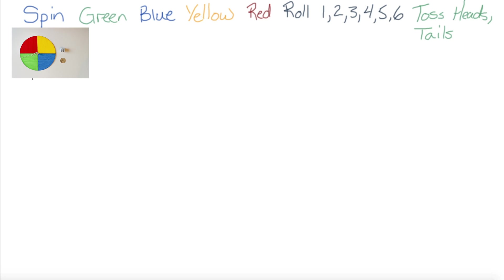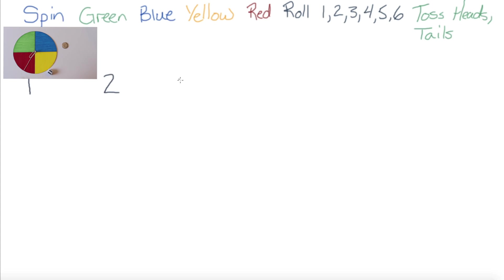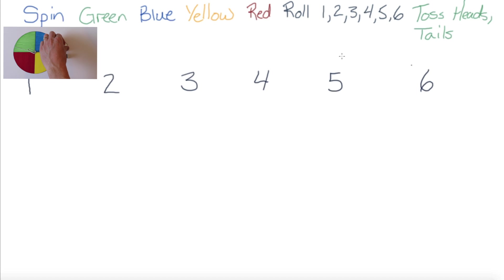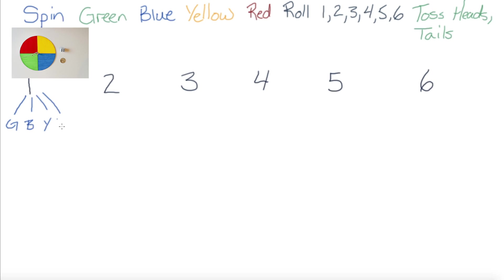Our tree diagram could look like this. I'm going to list first all the possibilities of rolling the six-sided die, horizontally across my page this time, really spreading them out: one, two, three, four, five, or six. Next, I'm going to list all the possible outcomes of spinning the spinner. So I could roll one and spin to get green, roll one and spin to get blue, roll one and spin for yellow, and roll one and spin and land on red. I could do the same for two — roll a two and spin to get green, blue, yellow, or red. I'm going to continue with this and meet you back in just a moment.